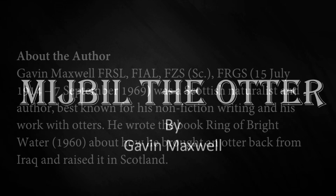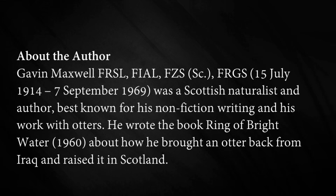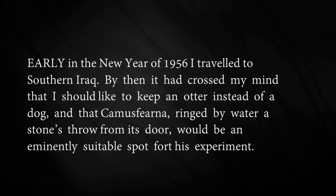The author of this chapter is Gavin Maxwell. Gavin Maxwell was a Scottish naturalist and author, best known for his non-fiction writing and his work with otters. He wrote the book 'Ring of Brightwater' about how he brought an otter back from Iraq and raised it in Scotland. In this story, the narrator is going to talk about his pet called Mijbil — an otter, which is a semi-aquatic animal usually found near the ocean, and it looks like a wild cat.